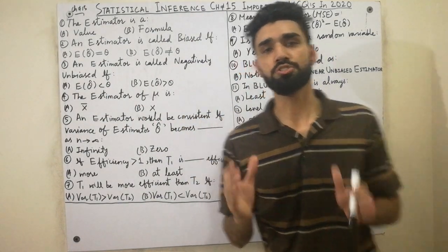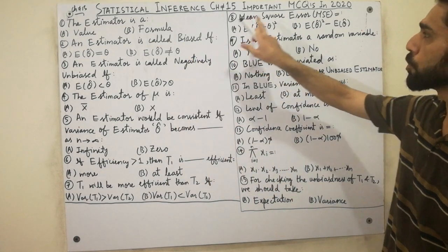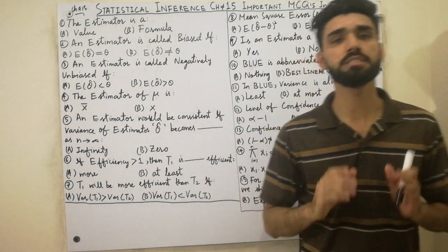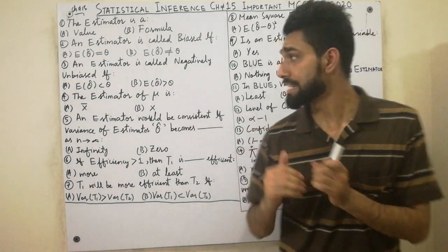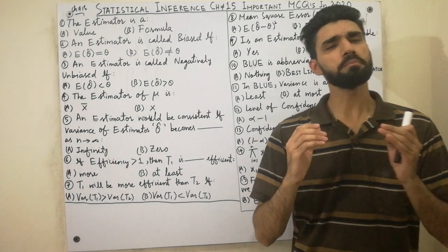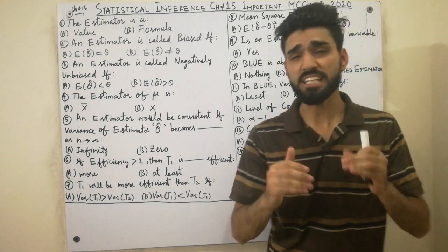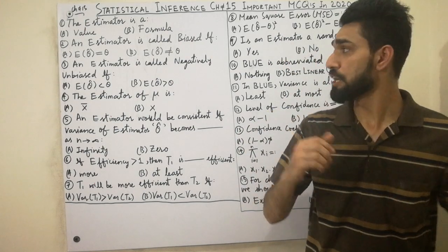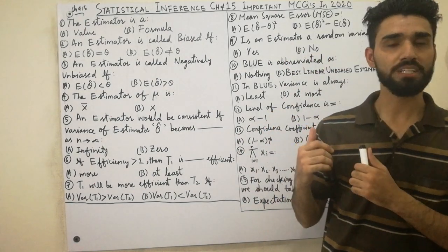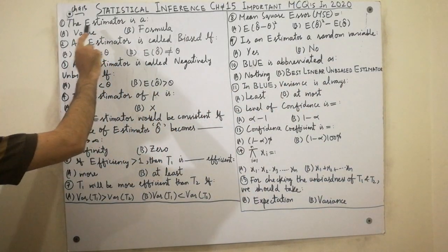Assalamu alaikum dear friends. Today I am here to explain the most important MCQs of Chapter 15: Statistical Inference, by the book of Share Muhammad Shodri. These MCQs are very important for all universities, so must watch this video. I will explain the reason why each answer is correct.